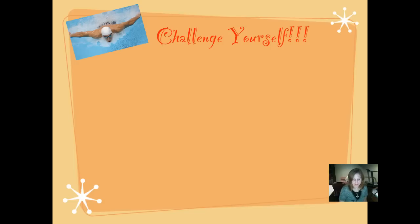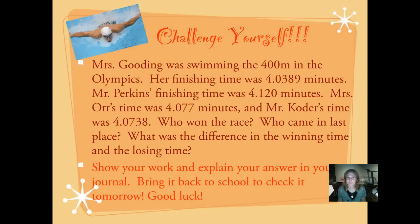It's time to challenge yourself. I bet this has something to do with swimming in the Olympics. Hey, it sure does. Mrs. Gooding was swimming the 400 meters in the Olympics. Her finishing time was four and three hundred eighty-nine ten-thousandths minutes. Mr. Perkins' finishing time was four and one hundred twenty-thousandths minutes. Mrs. Ott's time was four and seventy-seven-thousandths minutes. And Mr. Coder's time was four and seven hundred thirty-eight ten-thousandths minutes. Who won the race? Who came in last place? What was the difference in the winning time and the losing time? Have fun working this problem. Show your work and explain your answer in your journal. Come back to school and check it tomorrow.